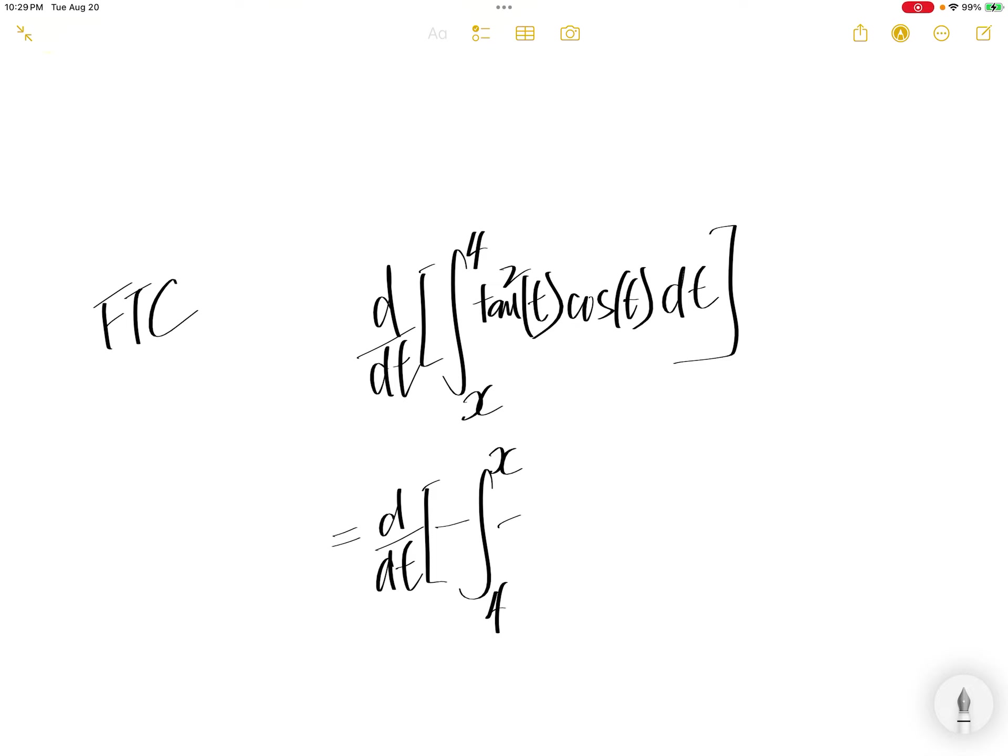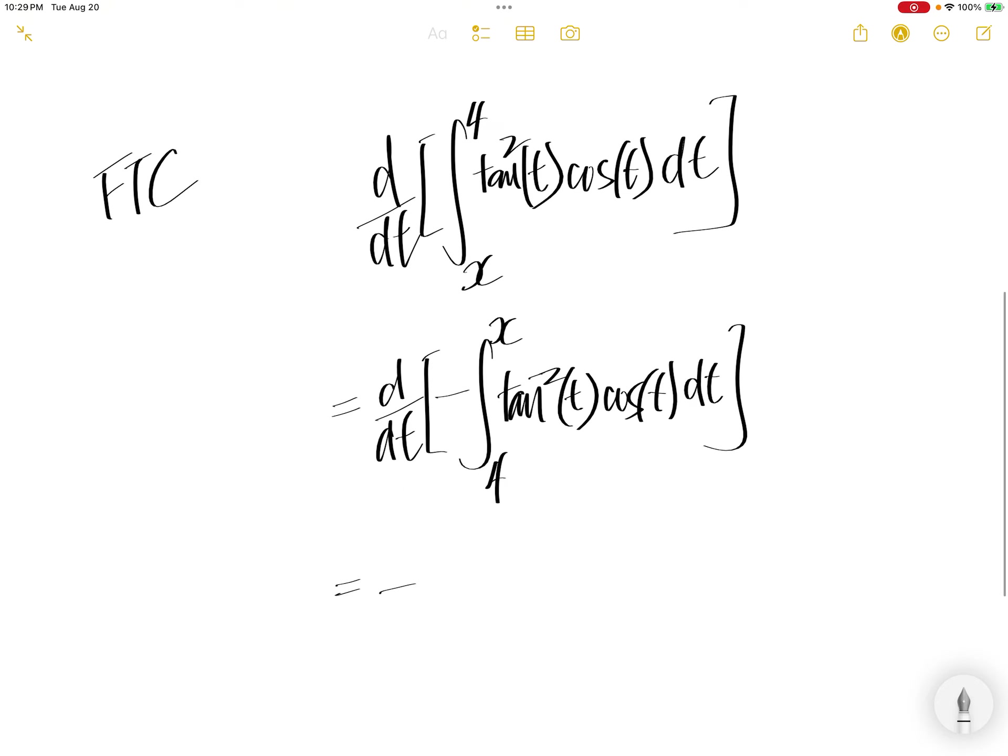If we do a switch, 4 goes here and then the x upper limit becomes lower limit and lower limit becomes the upper limit. You need to add minus to the integral. Minus 1 comes out from the derivative and then you have a constant.